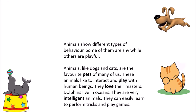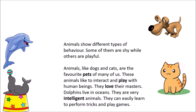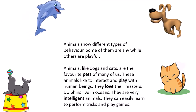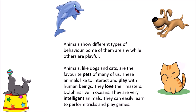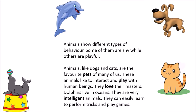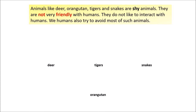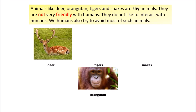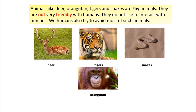Animals show different types of behavior. Some of them are shy while others are playful. Animals like dogs and cats are the favorite pets of many of us — they like to interact and play with human beings and love their masters. Dolphins live in oceans; they are very intelligent animals and can easily learn to perform tricks and play games. On the other hand, animals like deer, orangutan, tigers, and snakes are shy animals that are not very friendly and do not like to interact with humans.